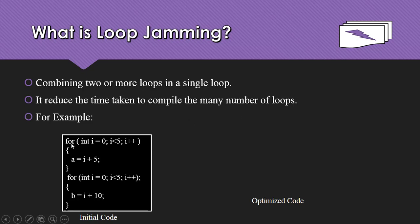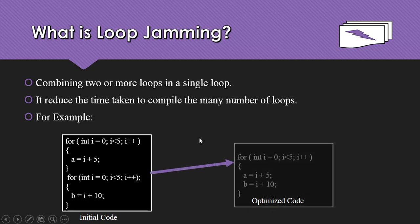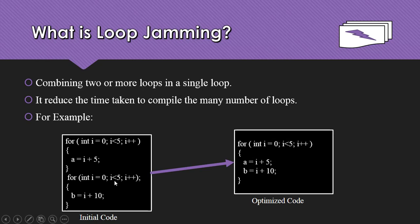In the loop jamming example, you can see we have two for loops performing some operations. We optimize this code by merging these two loops into a single loop.